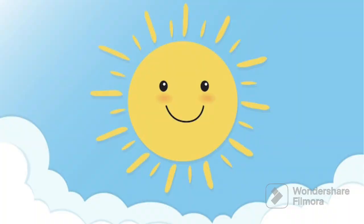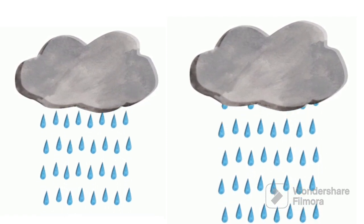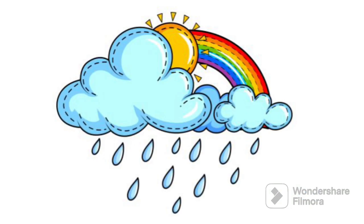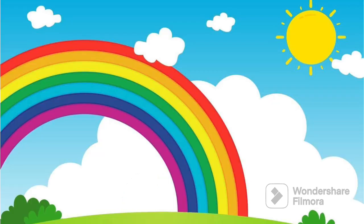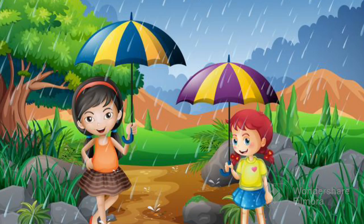Sunlight is made up of many colors. When it rains, there are tiny drops of water in the air. The sunlight goes into the water drops and gets bent, making all the colors spread out. This makes a beautiful rainbow in the sky with red, orange, yellow, green, blue and purple colors. Rainy season is a great time to stay indoors with a warm cup of hot chocolate, read books and listen to the soothing sound of raindrops. It's a time when everything turns green and lush and it makes our world look so pretty.